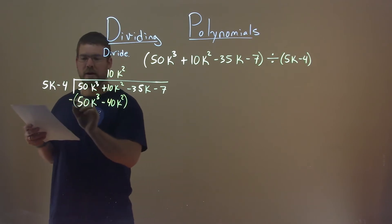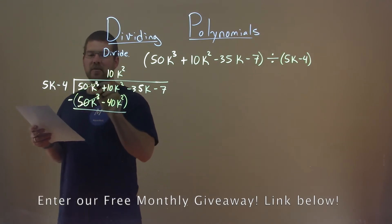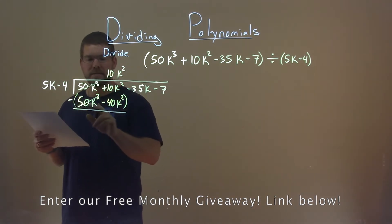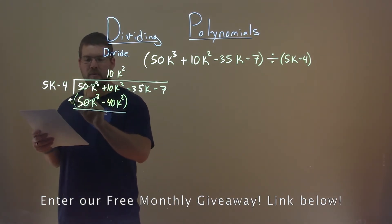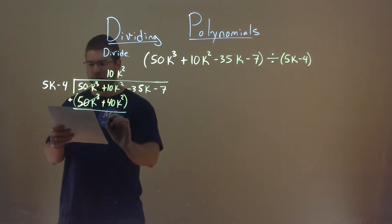Now we're going to subtract the whole thing. Don't forget, we're subtracting the whole thing. 50k to the third minus 50k to the third. It cancels out like it should have. 10k squared minus a negative 40k squared, or plus a positive 40k squared. That comes out to be a positive 50k squared.